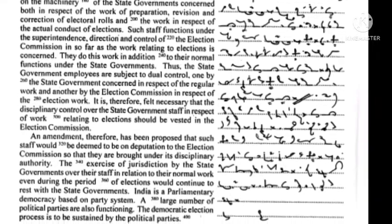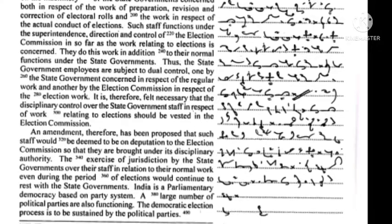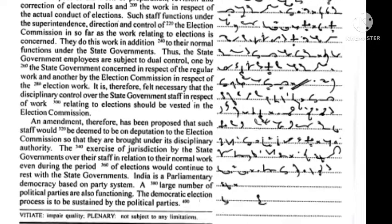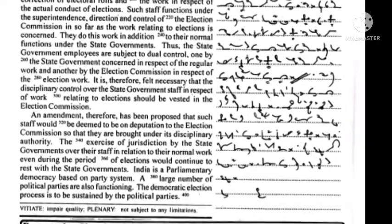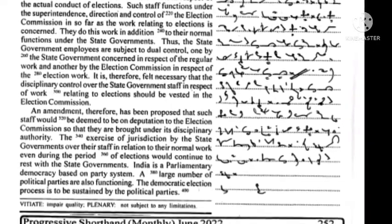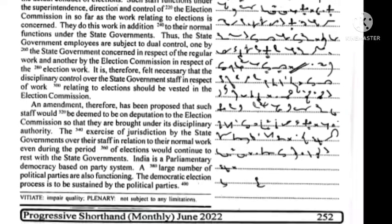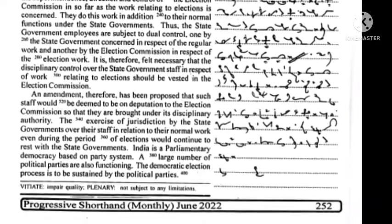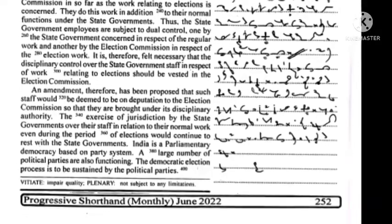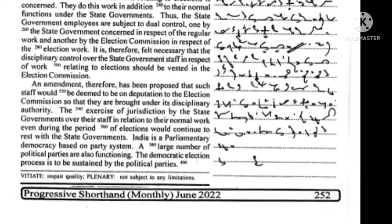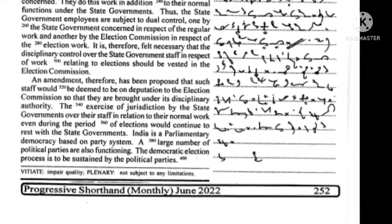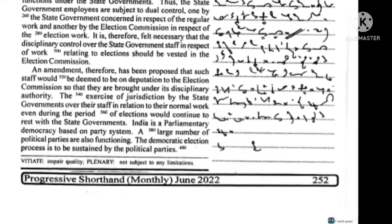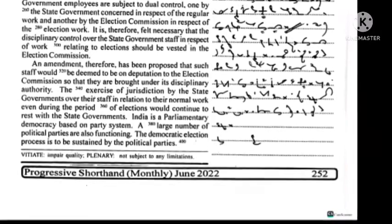Such staff functions under the superintendence, direction, and control of the Election Commission insofar as the work relating to elections is concerned; they do this work in addition to their normal functions under the state governments. Thus the state government employees are subject to dual control — one by the state government in respect of regular work, and another by the Election Commission in respect of election work. It is therefore felt necessary that the disciplinary control over state government staff in respect of work relating to elections should be vested in the Election Commission. An amendment has been proposed that such staff would be deemed to be on deputation to the Election Commission so that they are brought under its disciplinary authority.